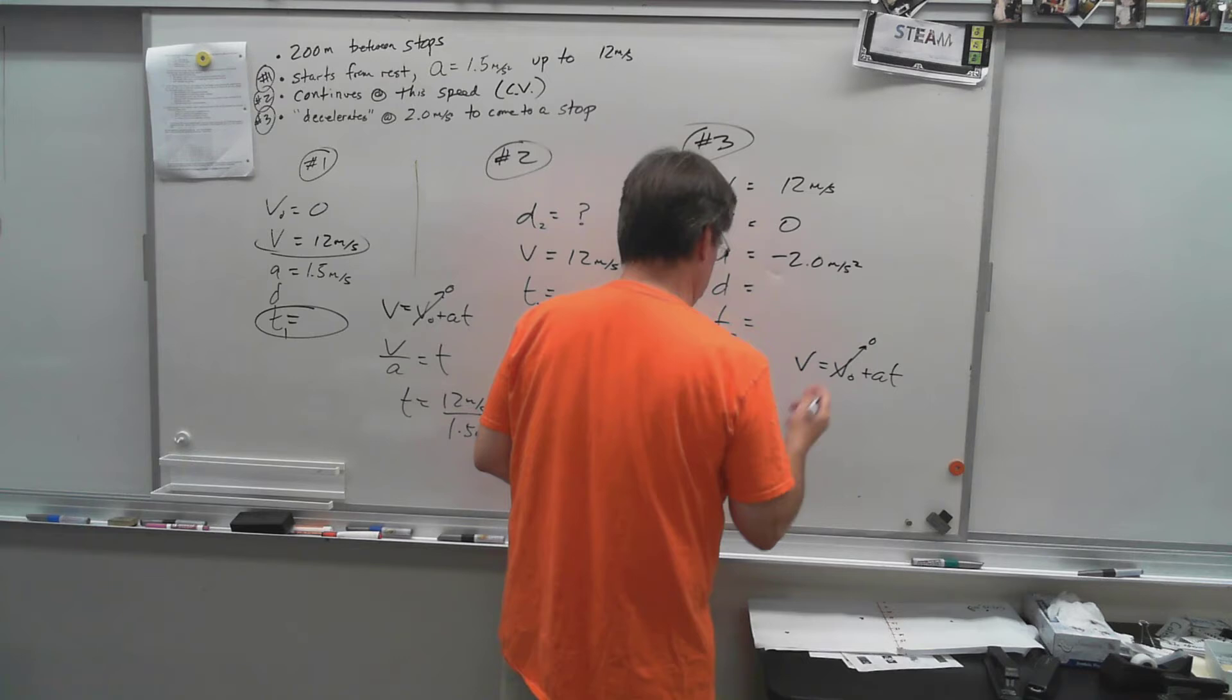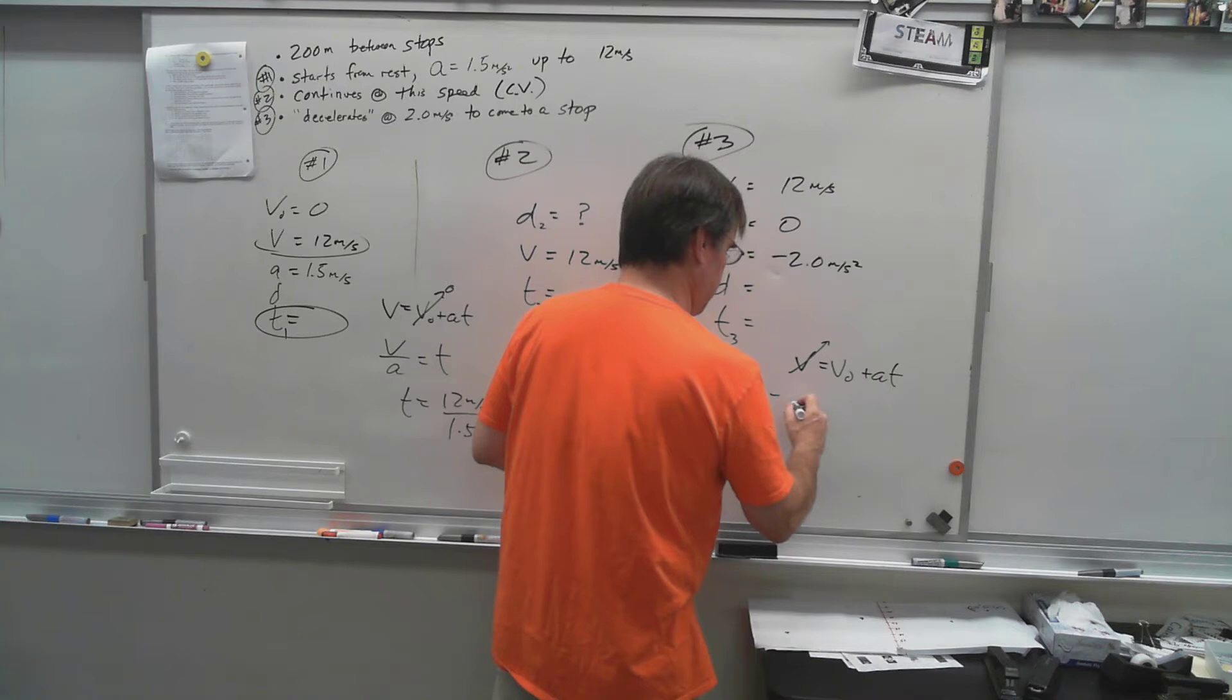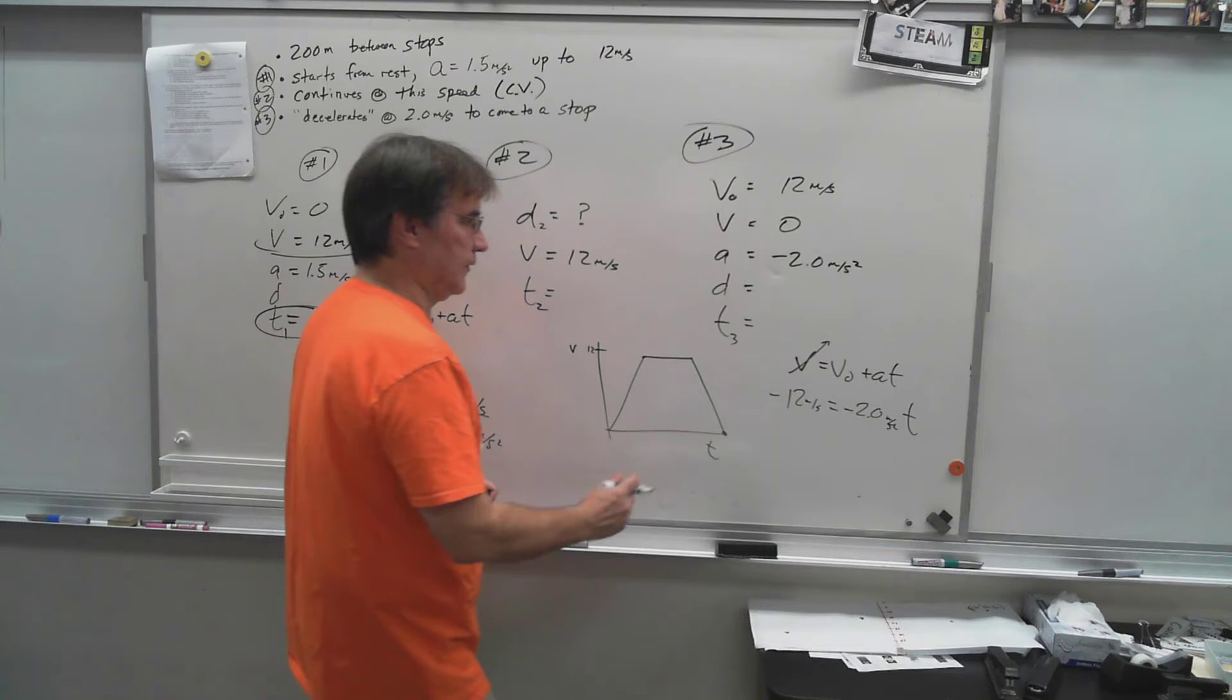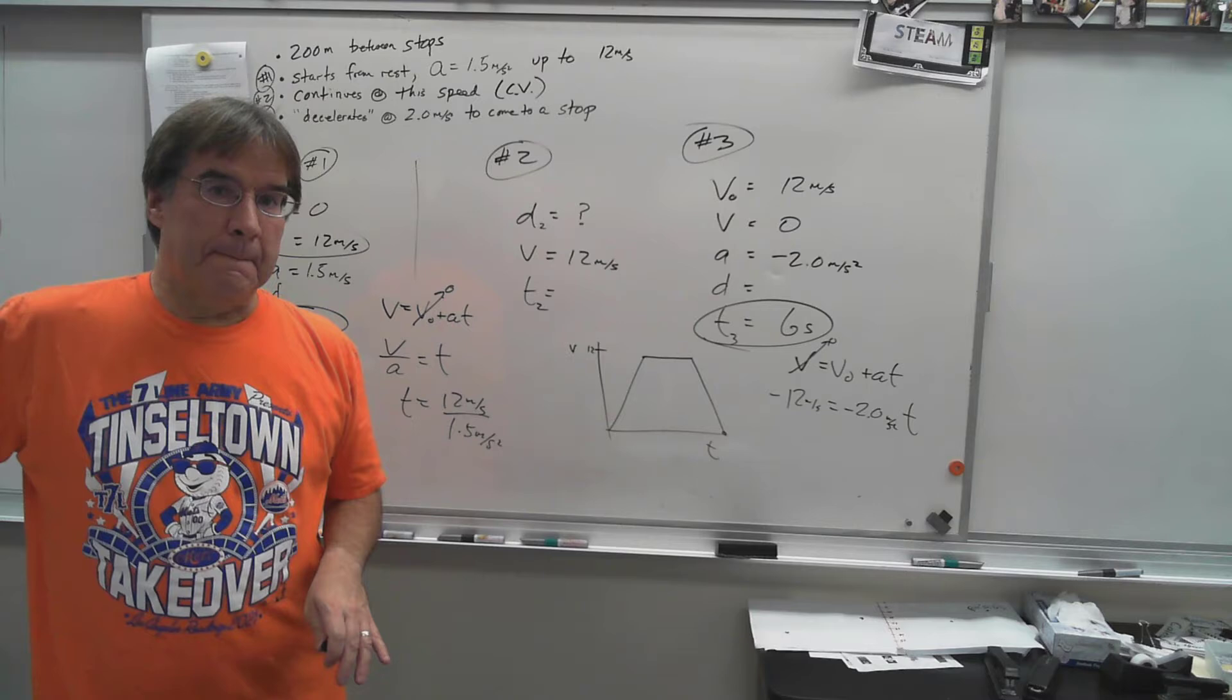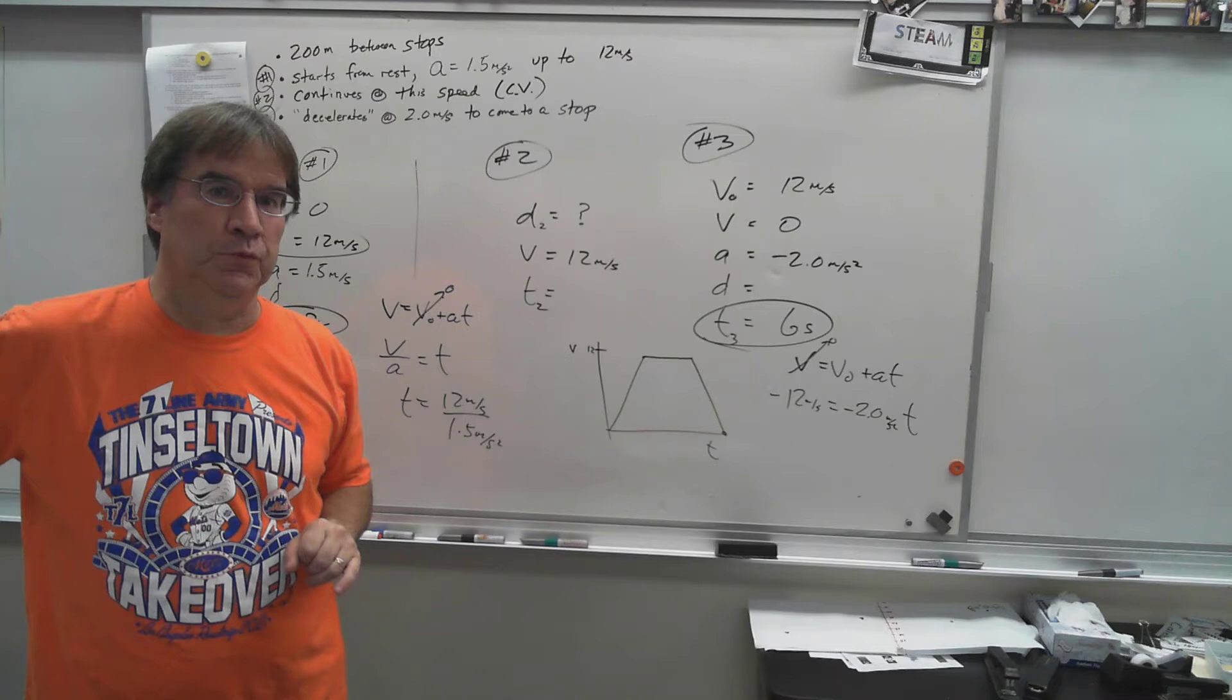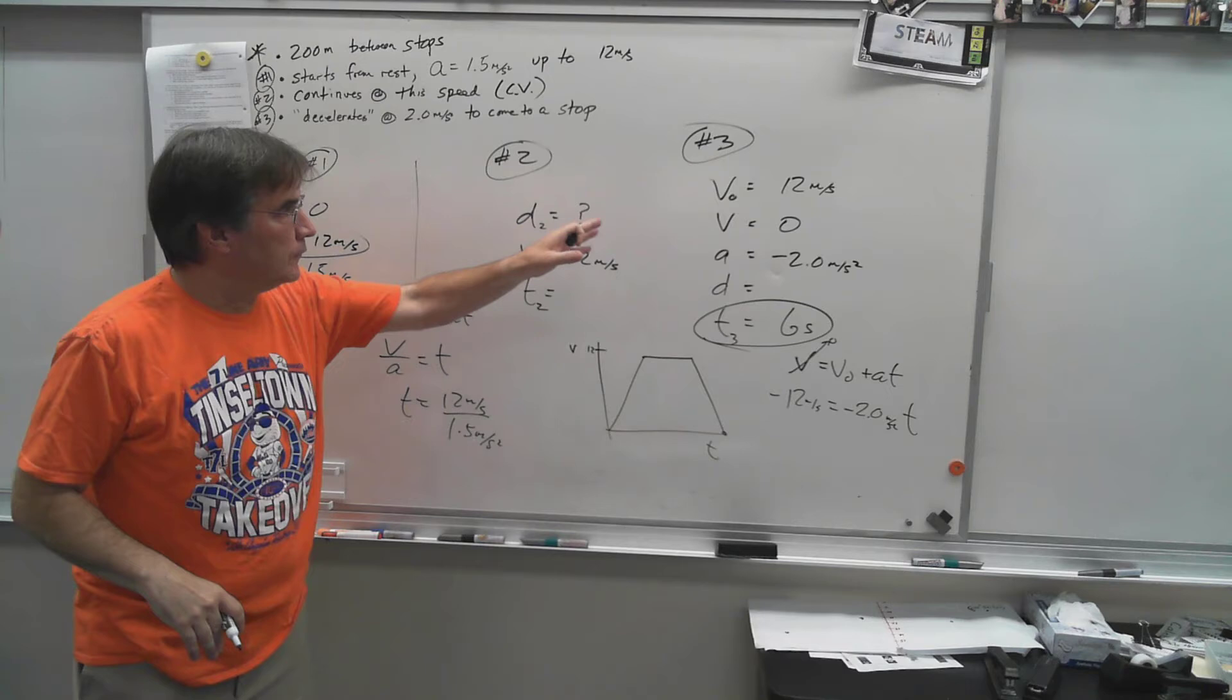That gives you enough to again go get the time. That's not zero, the final velocity is zero, that one's zero. So I'm going to move this over. I'll get negative 12 meters per second equals negative 2.0 meters per second squared times time. I can easily divide and I can get six seconds. So I've got my t1, I didn't calculate that, eight seconds, and I know my t3. If I could only figure out t2, I'd have this whole thing solved.